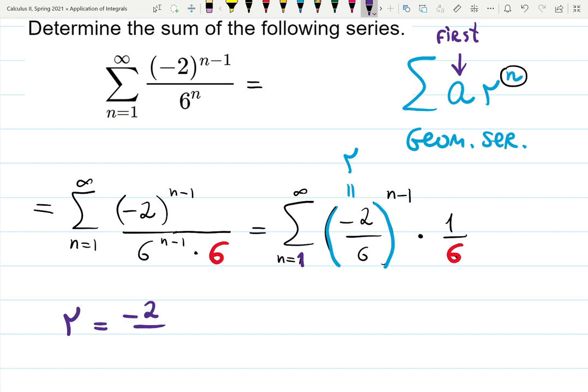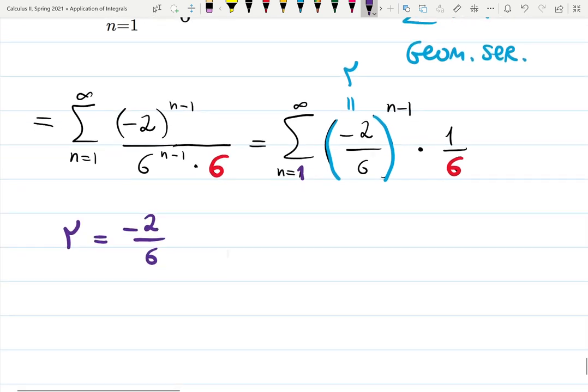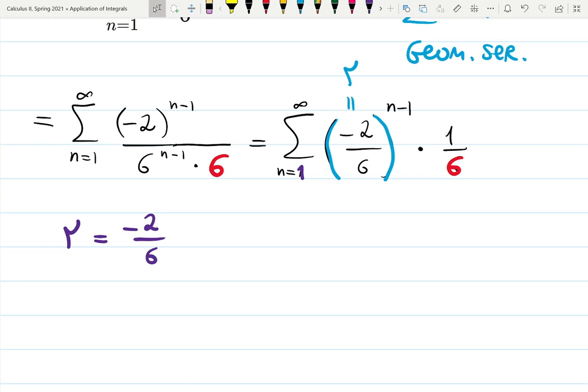Let's write down r. r is minus two over six. If r by absolute value is greater than one, then the series diverges. So let's check: by absolute value this is one-third. One-third is less than one, so the series converges.